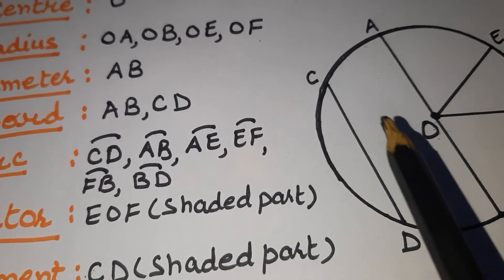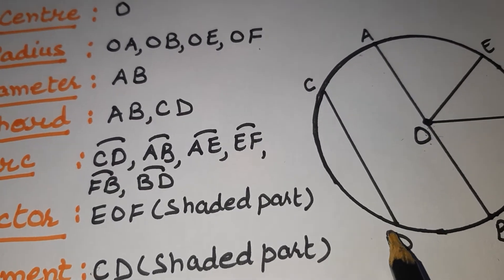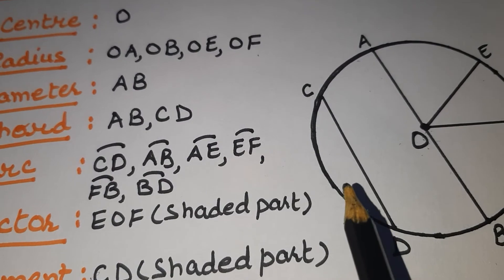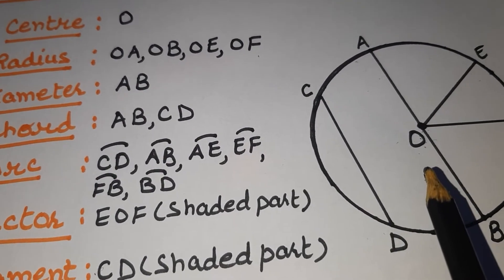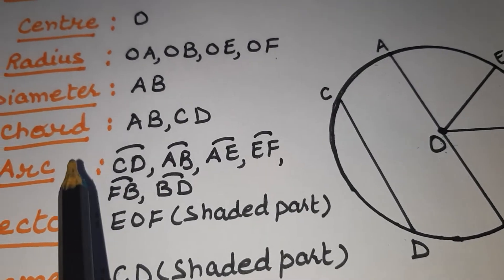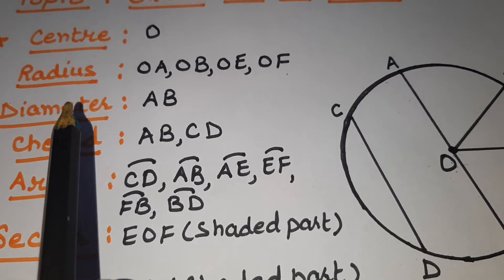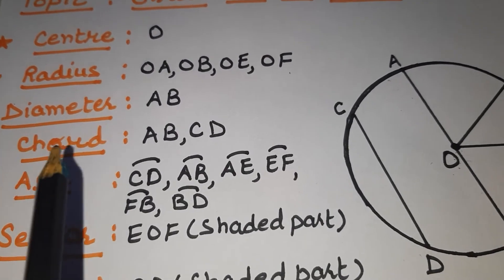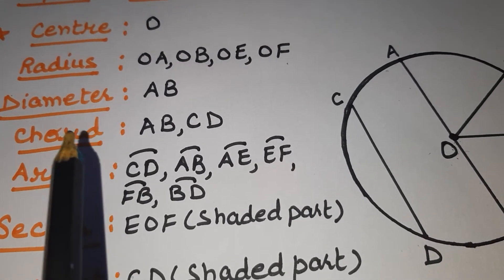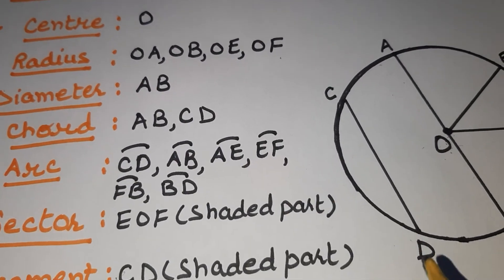Next is chord. Chord is any line segment which is meeting at two points at the edges of the circle. Now it is not compulsory to pass through center. What is the difference between chord and diameter? Diameter always passes through the center, but chord, it is not compulsory. It may pass through the center or may not.